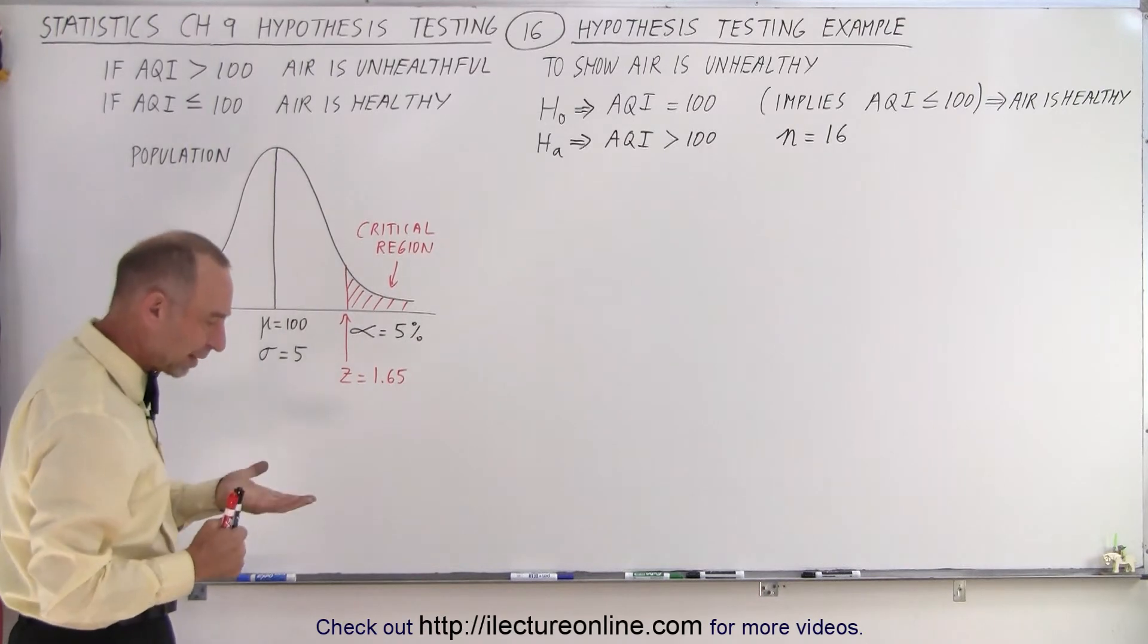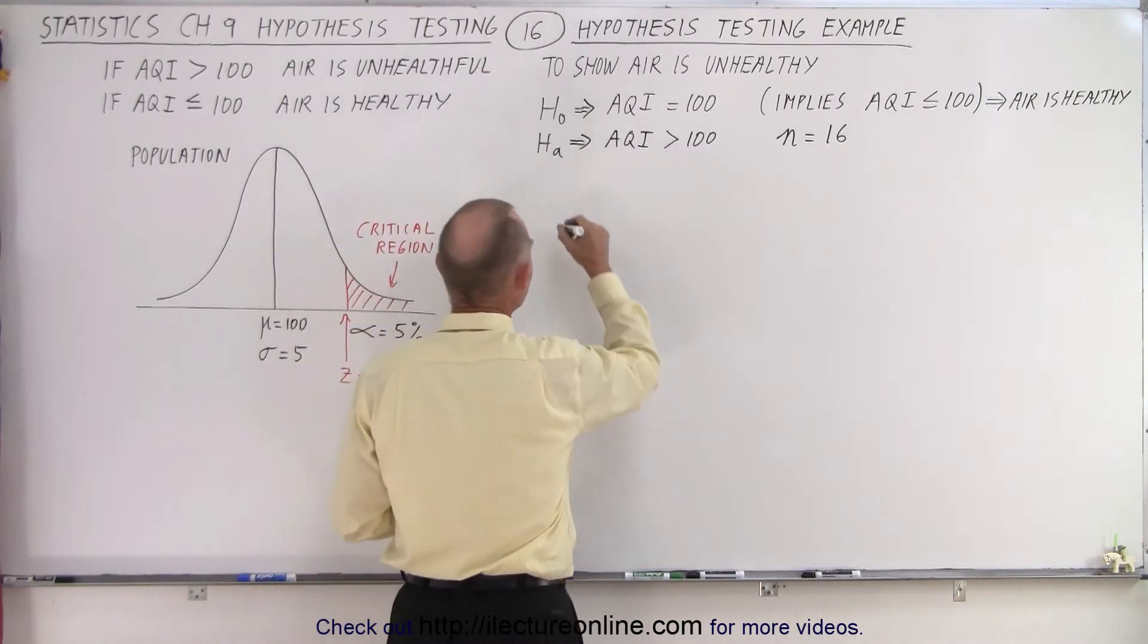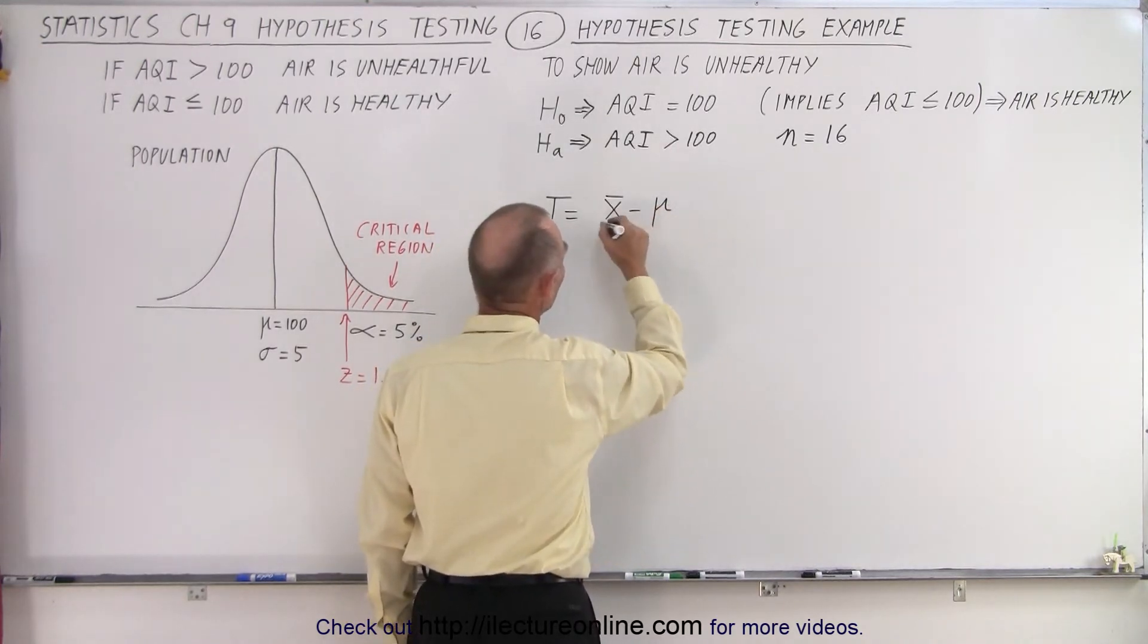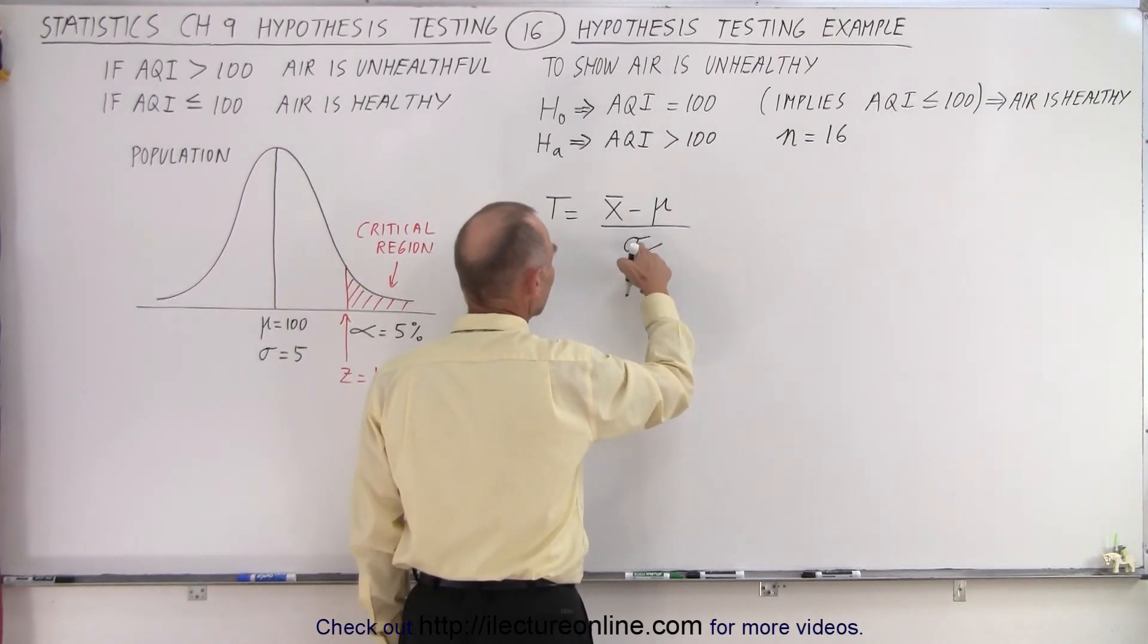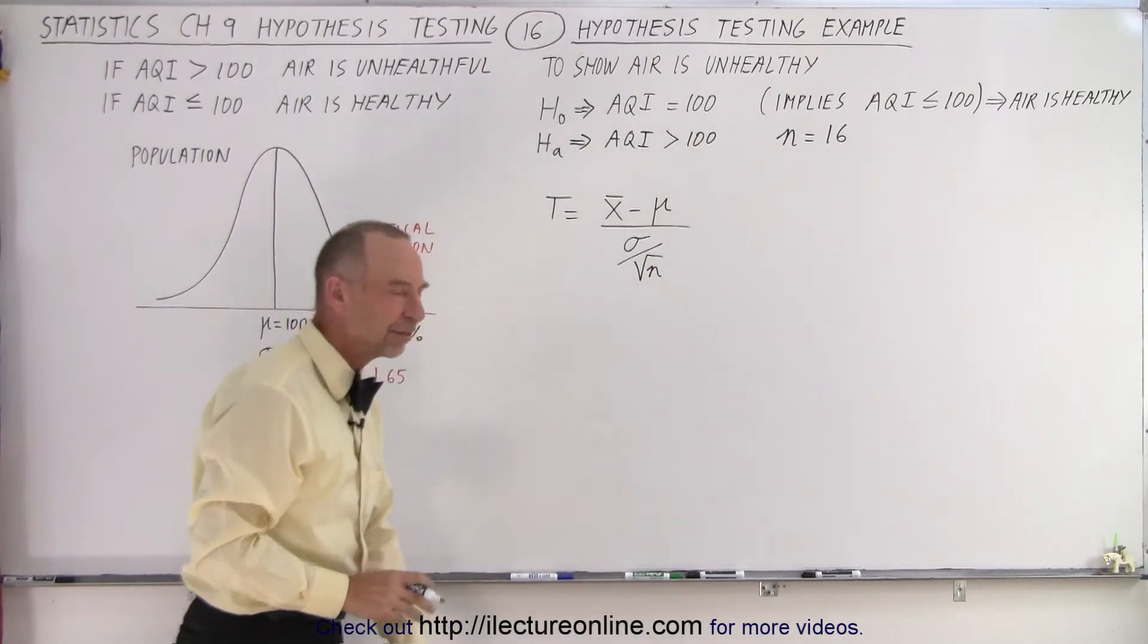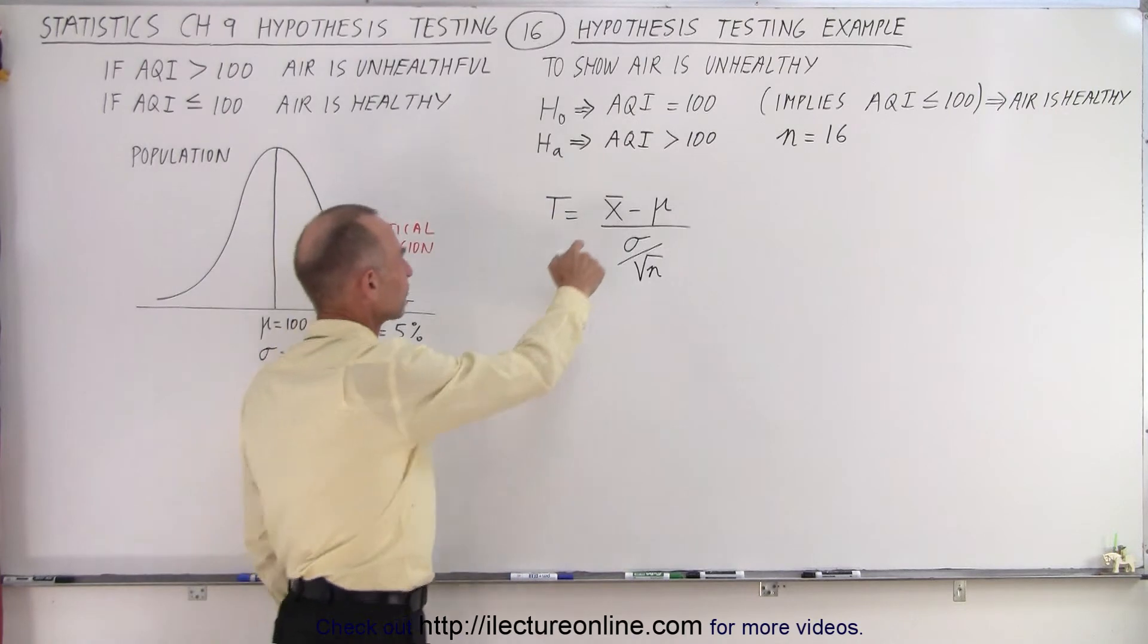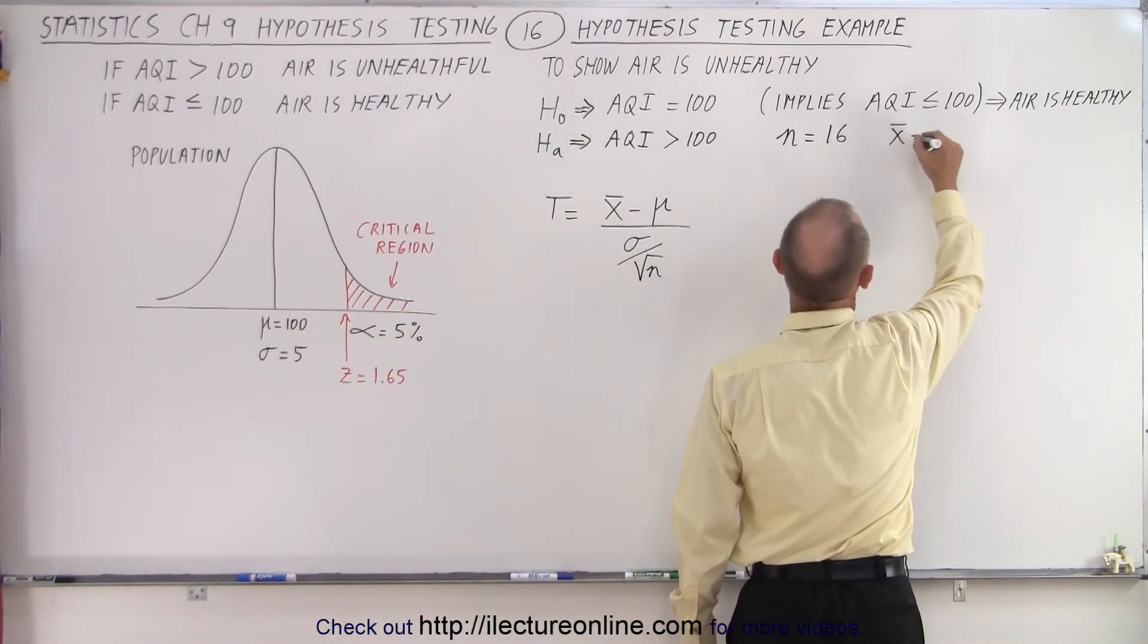All right. So the next thing we need to do is we need to calculate the test statistic. So T is going to be equal to the sample mean minus the population mean divided by sigma. Sigma is the standard deviation of the population, divided by the square root of the size of the sample, the sample size. Now, of course, we're going to need a mean of the sample. And let's say the mean of the sample is equal to 104.